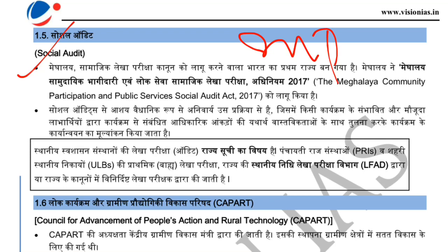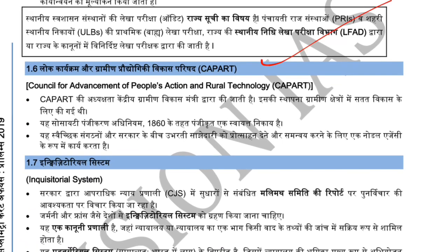Let's talk about GRAMID and the work of CAPART. CAPART stands for the Council for Advancement of People's Action and Rural Technology. It is an effort to promote participation by the GRAMID society. It has 15860 — remember, it is an autonomous body. It works as a nodal agency to promote voluntary partnerships between autonomous organizations, self-help groups, and the government. CAPART's work: it is an autonomous body that facilitates partnership between autonomous organizations and the government.